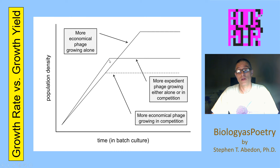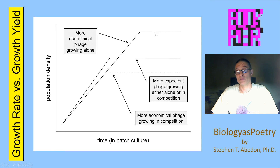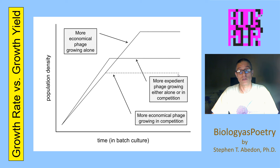So at the point where there is a peak in the density of the more expedient organism, you see the stopping of the growth of the more economical organism, but it's stopping well short of what its maximum yield would be growing alone, and instead is actually displaying a yield deficit in comparison to the more expedient organism.